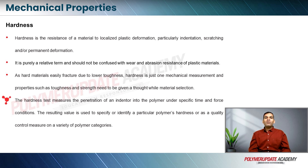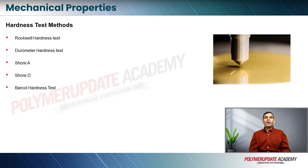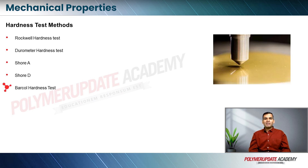The resulting value is used to specify or identify a particular polymer's hardness or as a quality control measure on a variety of polymer samples. Hardness measurement methods include the Rockwell hardness method, durometer hardness — Shore A and Shore D depending on whether you have a soft flexible or a rigid plastic — and the Barcol hardness tester.